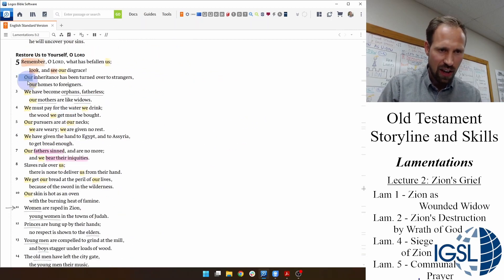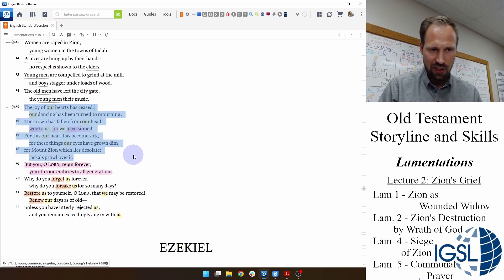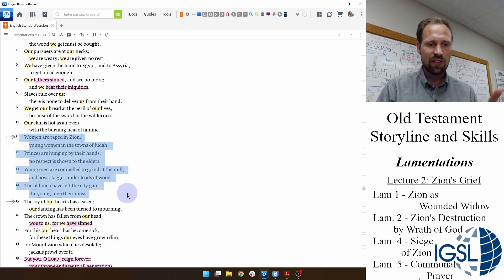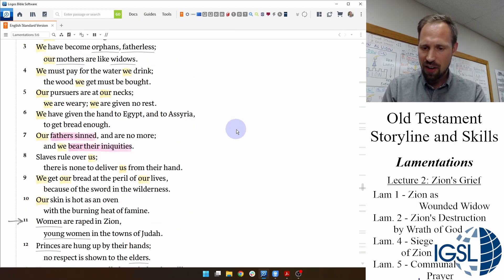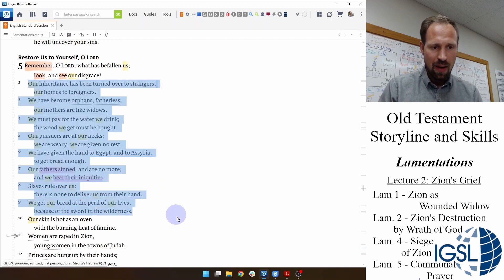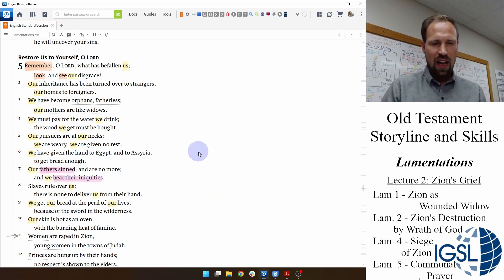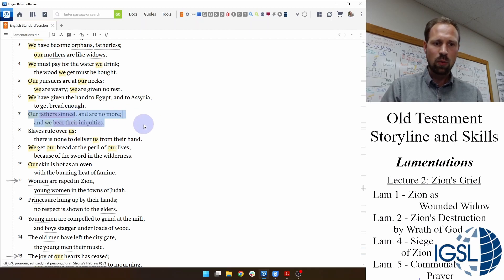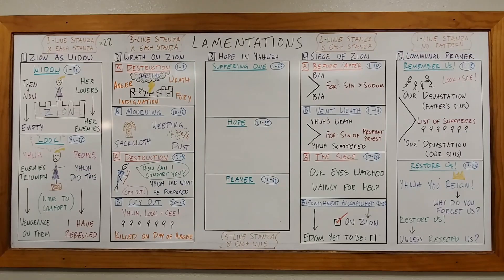And the outer sections of this chiasm are going to have these we, our, us statements. Let's look at those statements here in chapter 5. So here's the outer sections. Our, our, we, our, all these we, us, first person plural pronouns. And we have that here at the other section here in 15 to 18. And then in the middle of the chiasm, there's a list of all these suffering individuals. We have women, young women, princes, elders, young men, boys, old men, and young men. And if you look at the center of these we, our, outer frames of the chiasm, at the center of them, there's a statement about Israel's sin. Remember, Lamentations recognizes that Israel's sin was great, but their judgment was just. It was deserved. And here in verse 7, it says that our fathers sinned and are no more, and we bear their iniquities. And if that is kind of confusing to you and a little unsettling, it's clarified in verse 16 when it says, woe to us, for we, we ourselves have sinned.